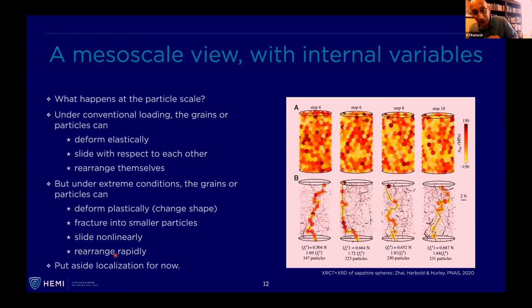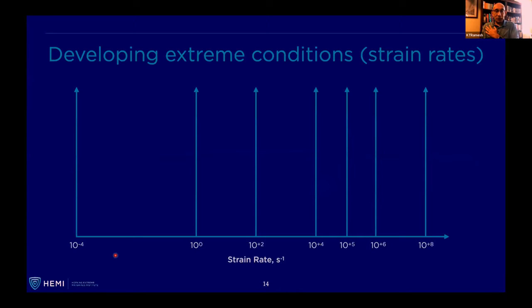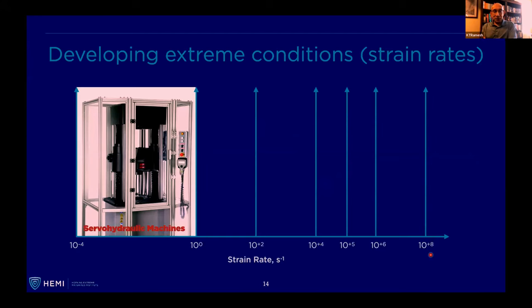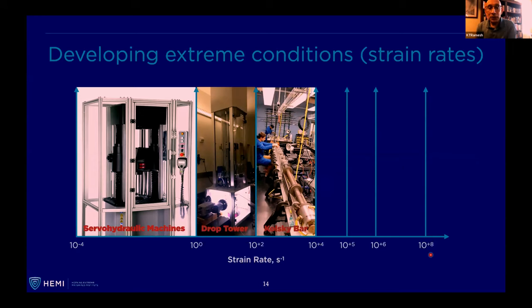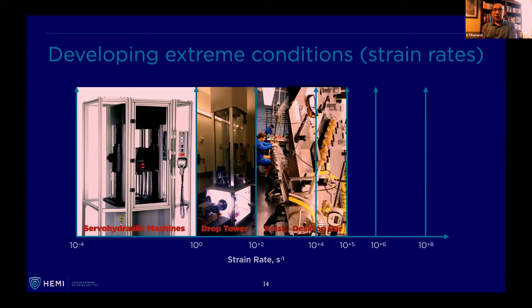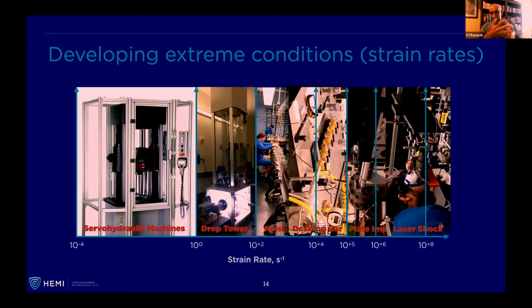What happens when we develop extreme conditions in very short times? Strain rates go from 10⁻⁴ to 10⁸ per second. You can do MTS machines for the low strain rate range, drop towers for intermediate, and Kolsky bars for high strain rates — that's Vignesh in the back, actually using desktop Kolsky bars in his experiments. You can do miniaturized Kolsky bars to get to higher strain rates, plate impact for 10⁵ and above, and laser shock to get above 10⁵. I'm going to show you work from quasi-static hydraulics, Kolsky bars, and plate impact.